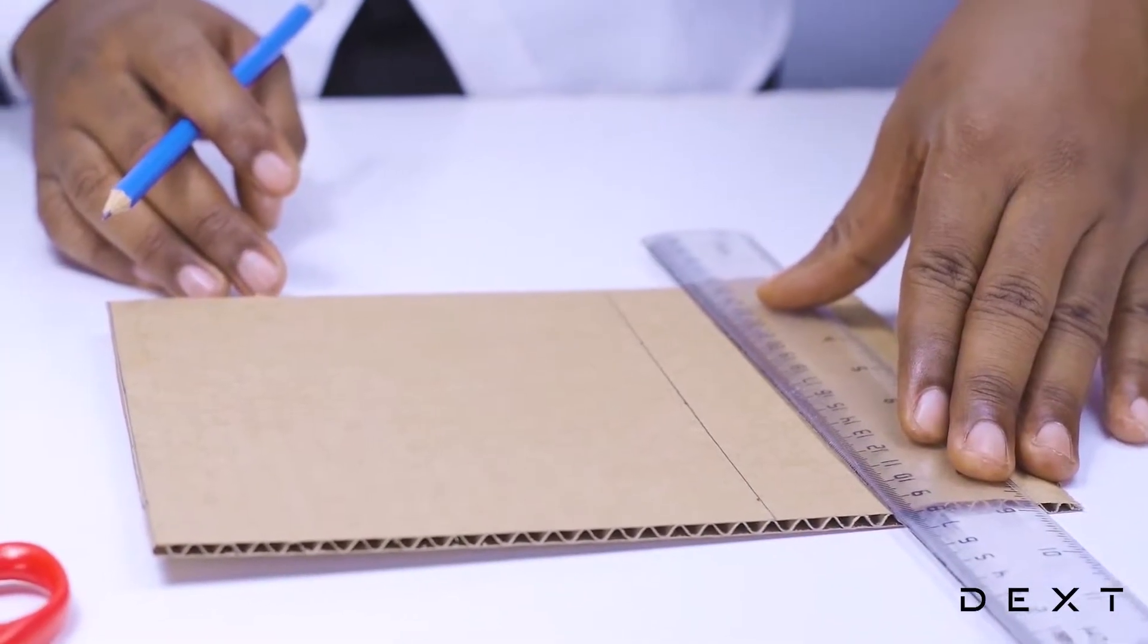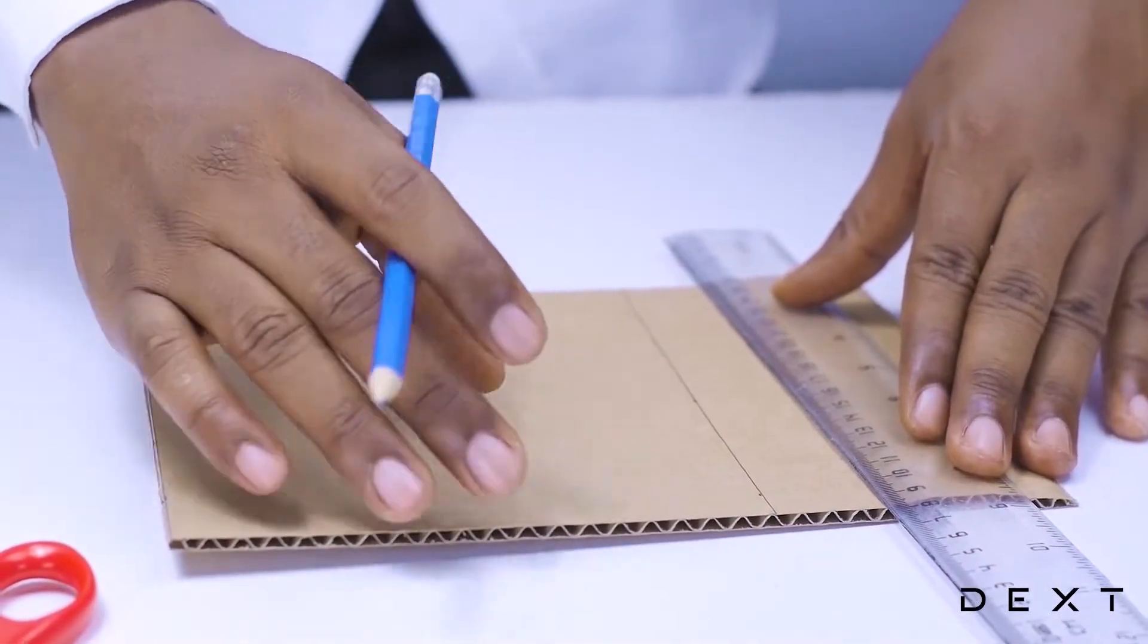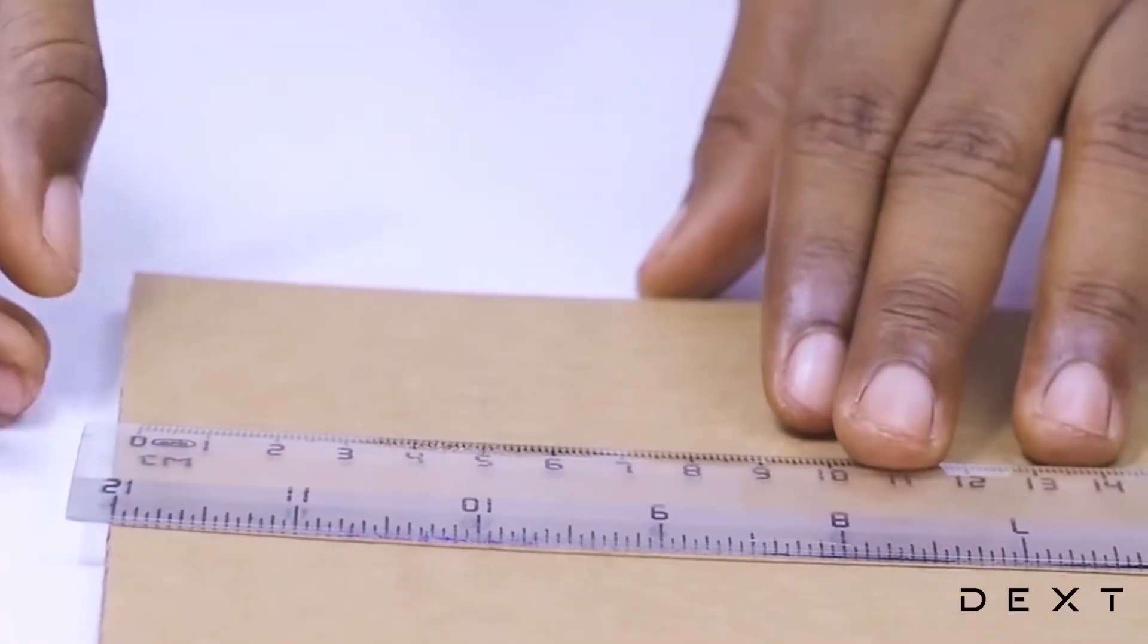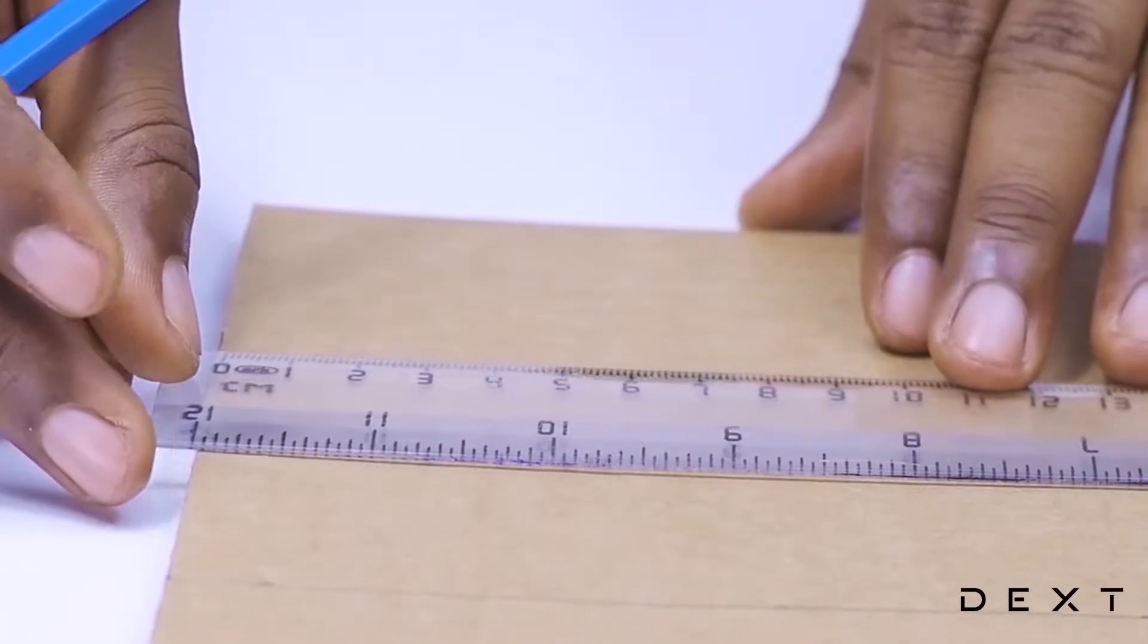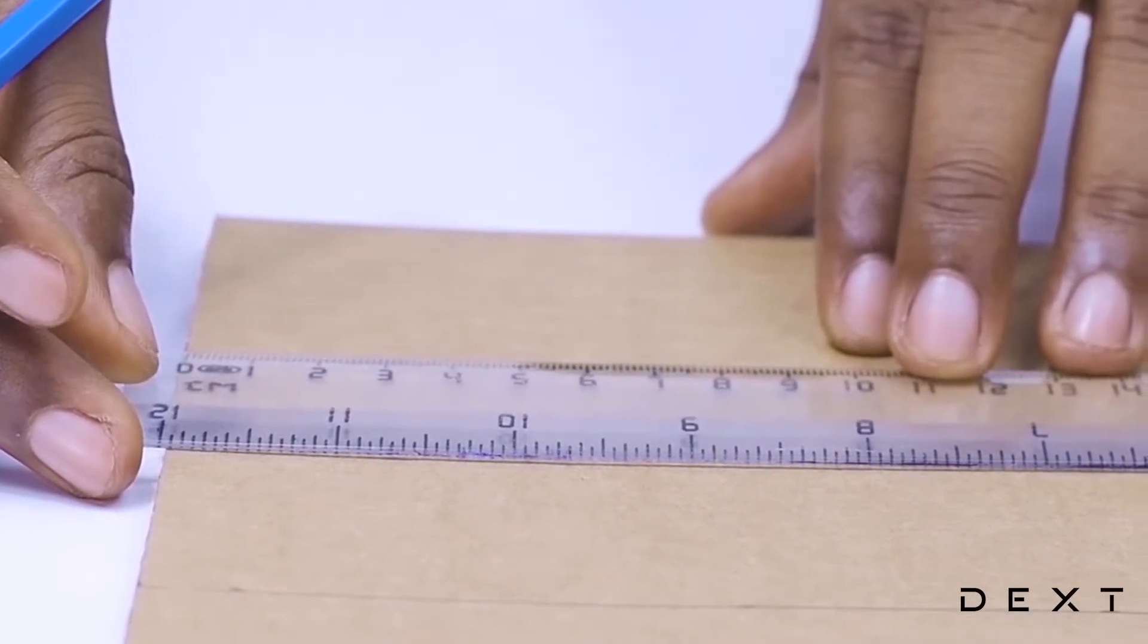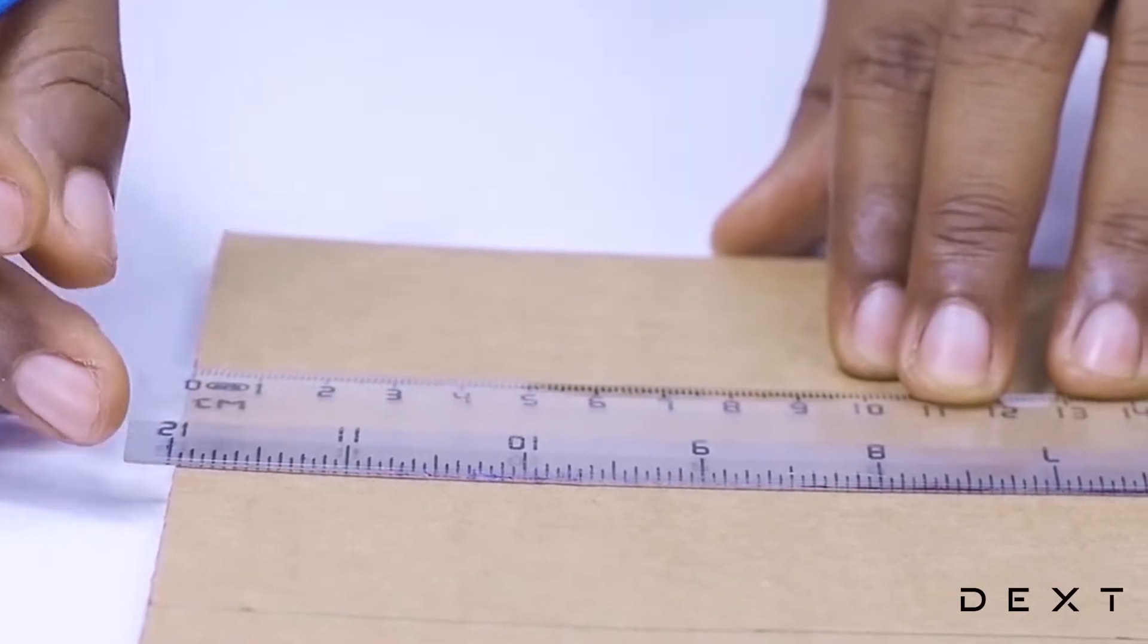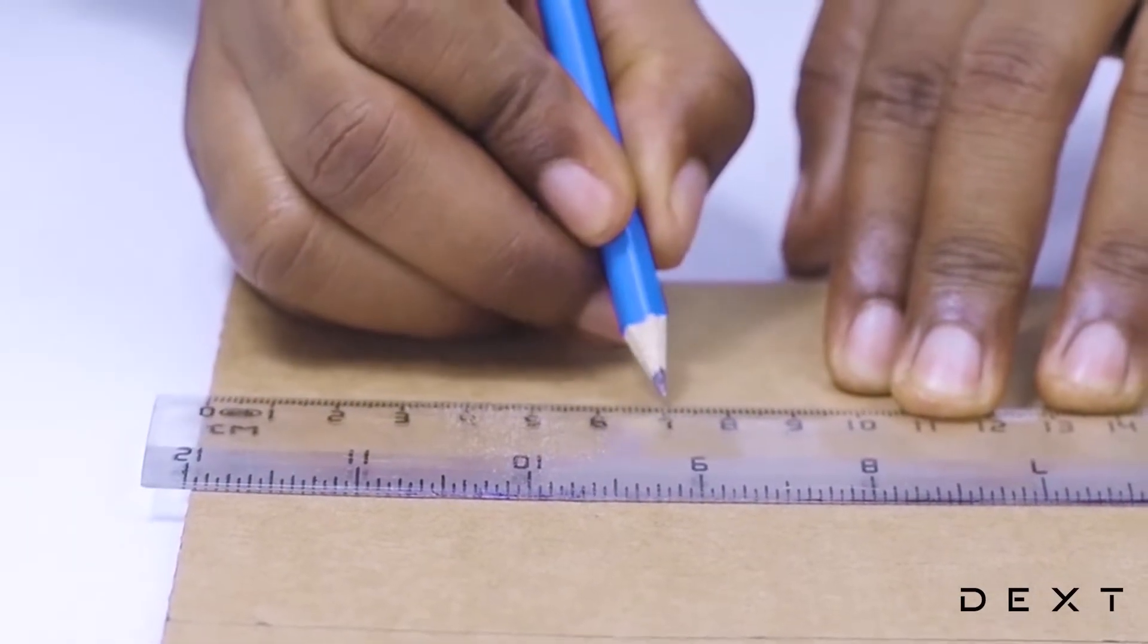We are now going to cut our 7 cm. Don't forget, we are making a rectangle of size 7 cm by 15 cm. Now that we've measured 15 cm, we need to measure 7 cm.